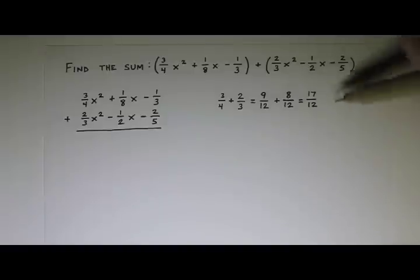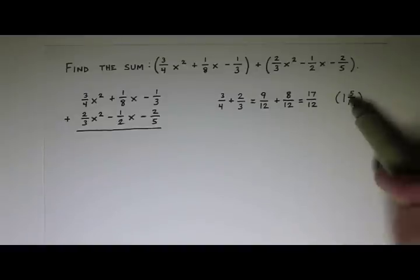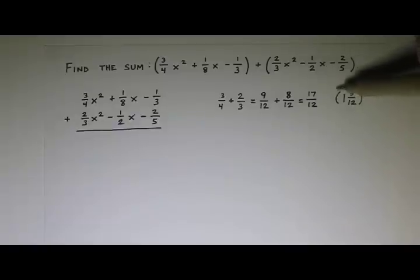Now you could, if you wanted to, write that as 1 and 5/12. But when we're adding up our polynomials here, I'm going to have you leave it like this rather than writing it as a mixed number. So we got this term that's 17/12 x².